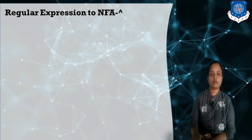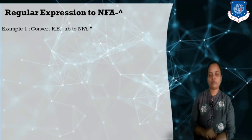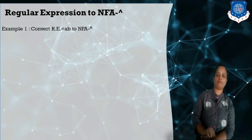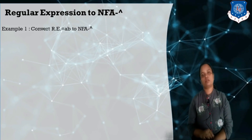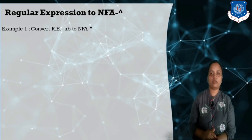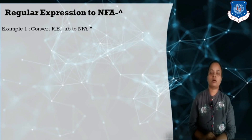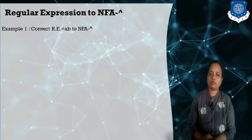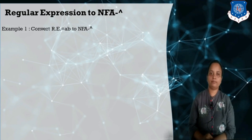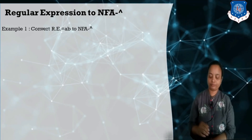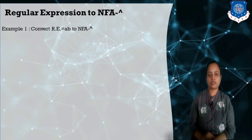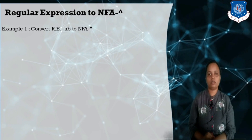For converting a regular expression to NFA-null, we are using the Thompson Construction Method. What is the Thompson Construction Method and how are we going to construct the NFA-null from the given regular expression? As we know, there are three basic operations we can perform on a regular expression: concatenation, union, and the third one is Kleene star.